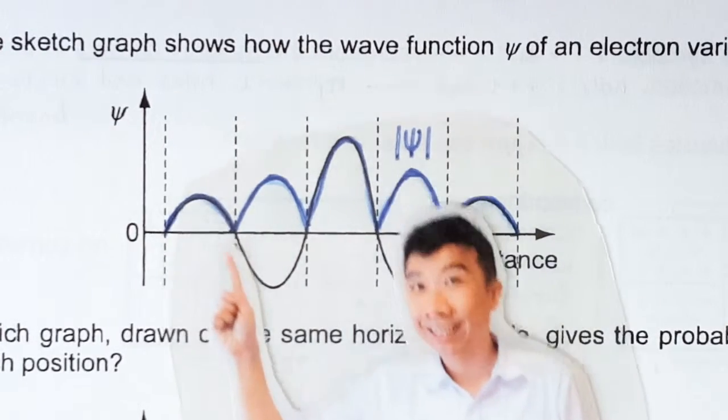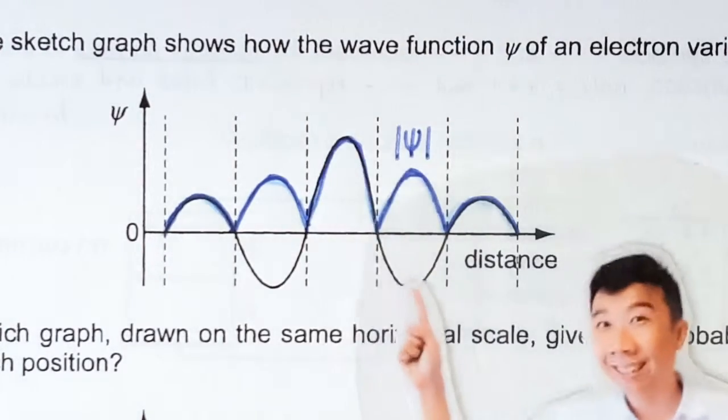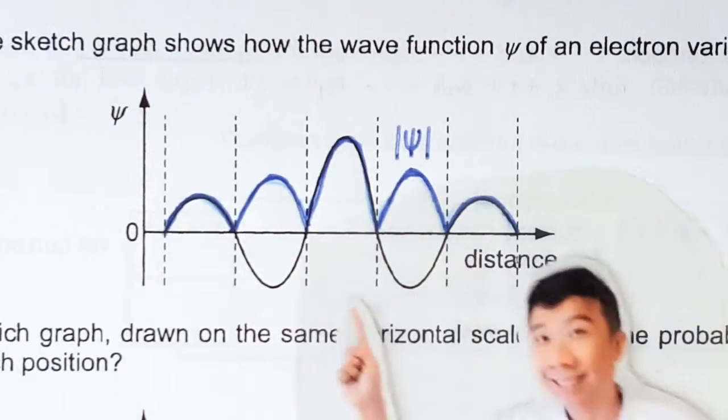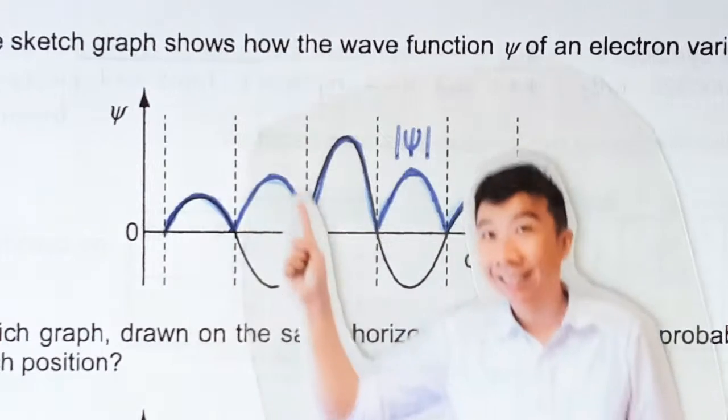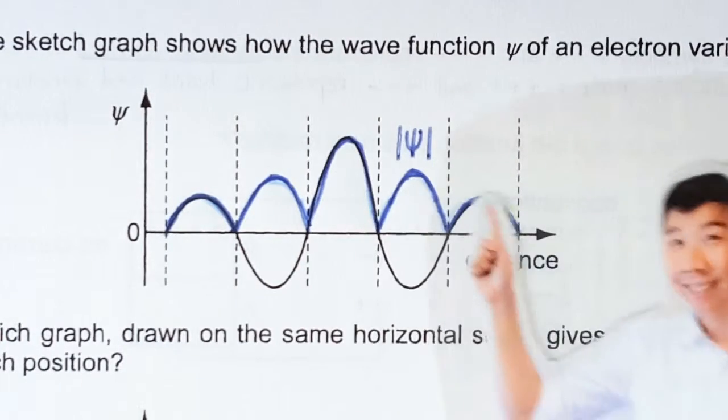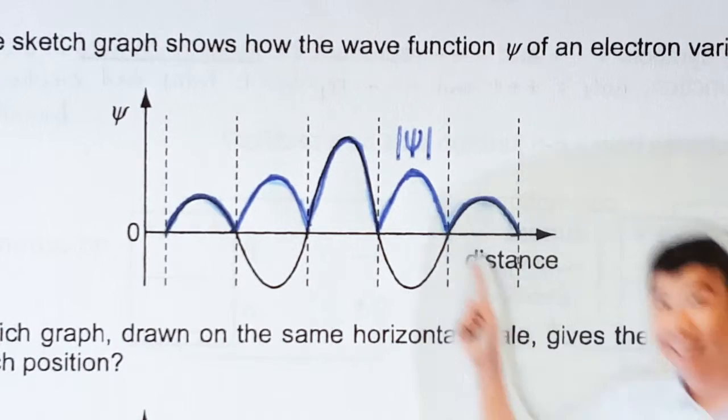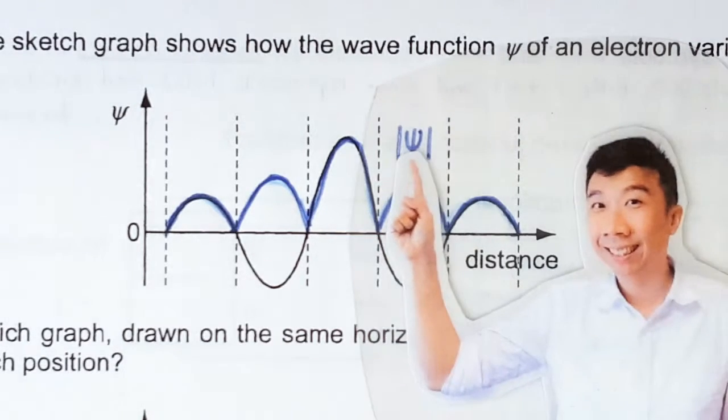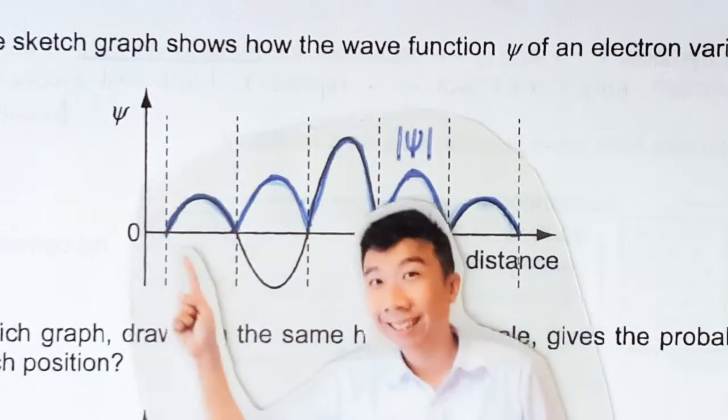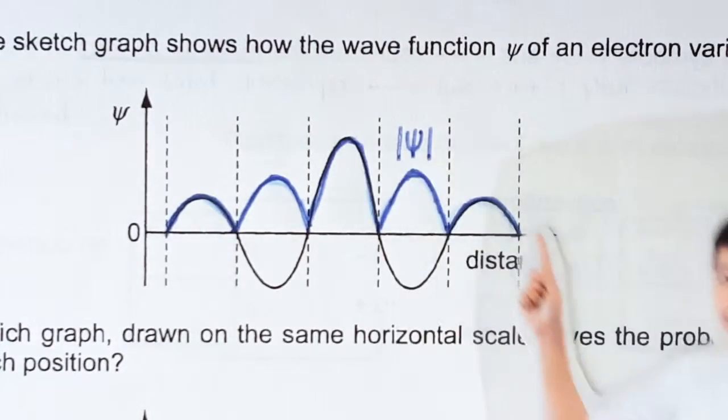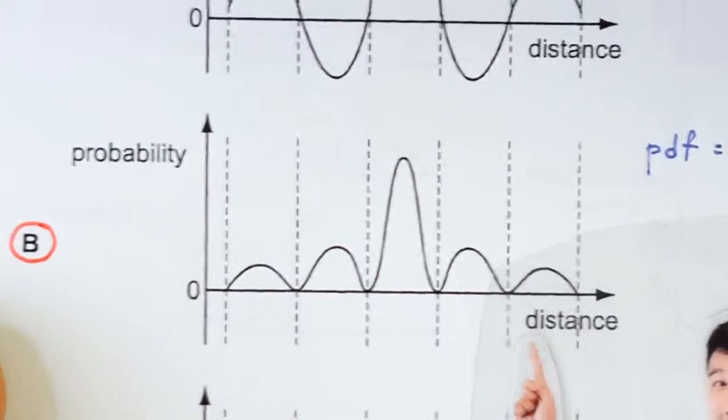We are given the wave function. If this is the wave function, then the amplitude of this wave function is the blue line here. To get the probability density function, we know that we've got to square the amplitude of the wave function. So by taking the square of this blue line, you are going to get option B.